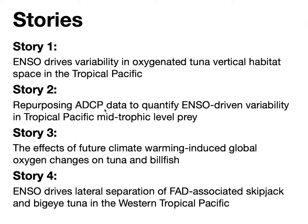Story number one will be about how ENSO drives variability in oxygenated tuna vertical habitat space in the tropical Pacific. Story number two will be about repurposing ADCP, or acoustic Doppler current profiler, data to quantify ENSO-driven variability in tropical Pacific mid-trophic level prey. Story number three will be about the effects of future climate change on oxygen and how that's going to affect tuna and billfish. And story number four will be about how ENSO drives lateral separation of FAD, or fish aggregating device, associated skipjack and bigeye tuna in the western tropical Pacific.